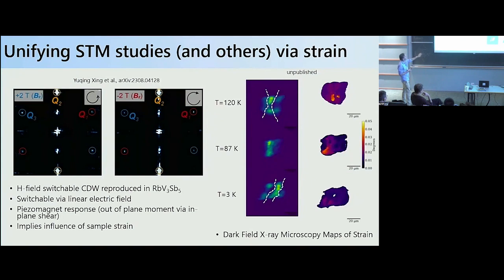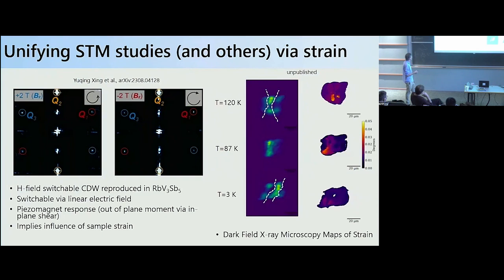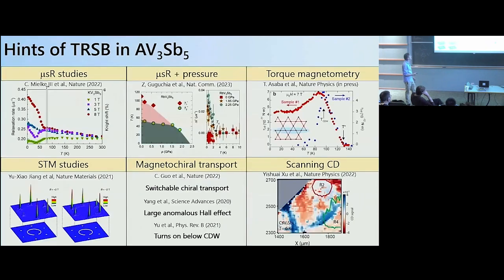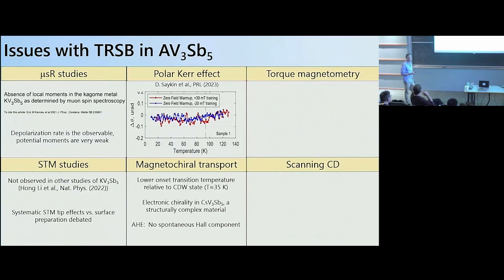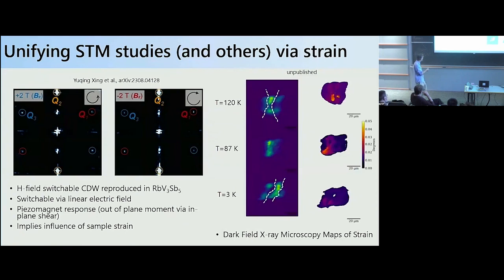Recent work by Vidya Madhavan's group on the rubidium system is pushing the field forward on the STM controversy. She reproduces the original chirality in the CDW reported by Wang's group — she can see surface chirality at the three equivalent M-points and flip the direction with magnetic field. But she further finds that this chirality can also be switched with the application of linearly polarized light. Work with Rafael Fernandez suggests this comes from a piezo-magnetic response, which by symmetry analysis would imply broken time reversal, but with sample strain having a very large effect in activating a Q=0 component.